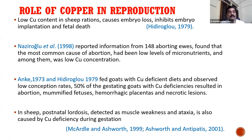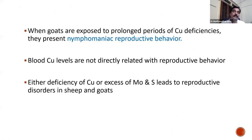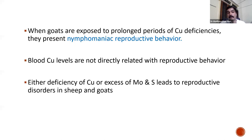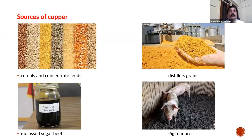When goats are exposed to prolonged copper deficiency, it can lead to nymphomaniac reproductive behavior — continuous estrus in females. Blood copper levels are not directly related to reproductive behavior; blood is not an ideal way of diagnosing copper deficiency or toxicity, as blood levels may appear normal while behavior is abnormal. Either deficiency of copper or excess of molybdenum and sulfur leads to reproductive disorders in sheep and goat.